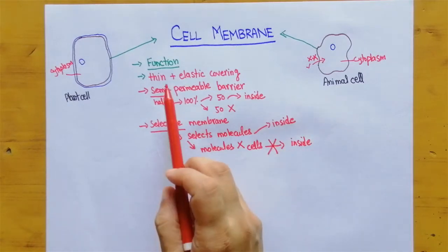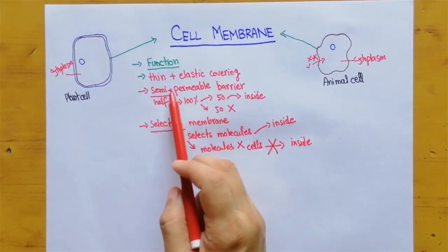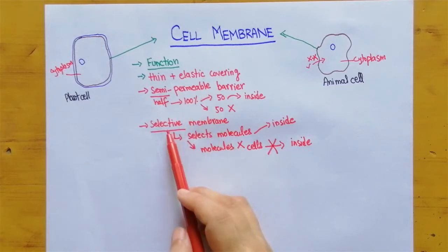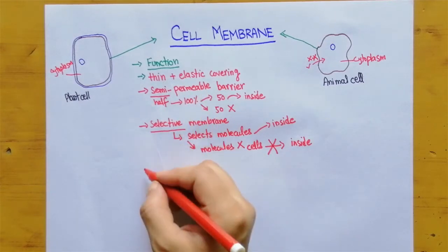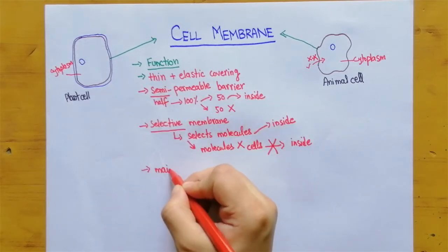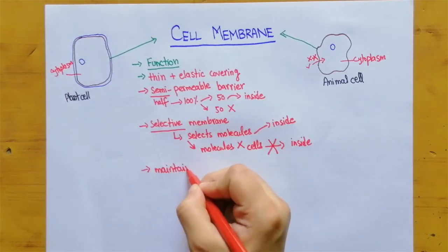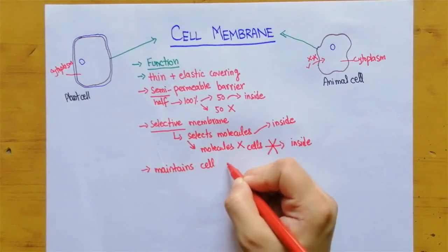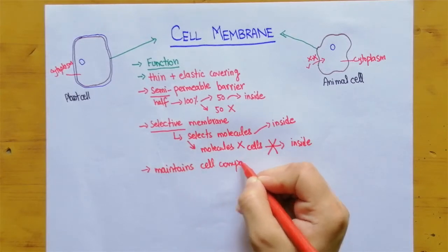So it is thin and elastic covering, it is semi-permeable and it is also a selective membrane. In this way it maintains cell composition.